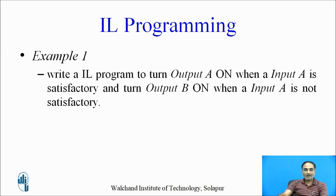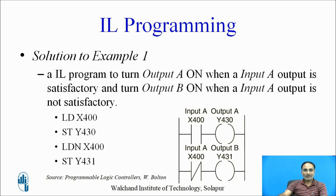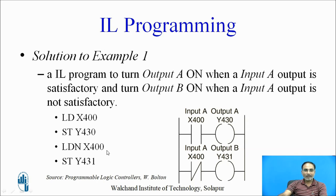For the first rung: LD X400 reads the status of Input A, and ST Y430 applies that status to Output A. For the second rung: LDN X400 reads the status of Input A in negative form, and ST Y431 applies this status to Output B.